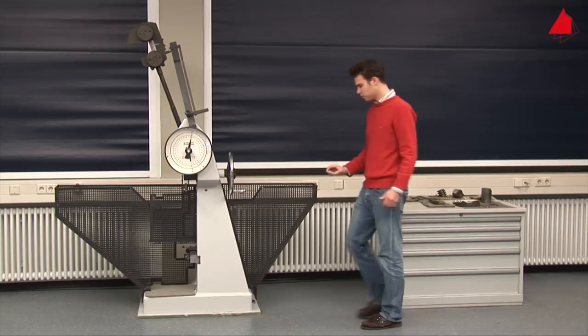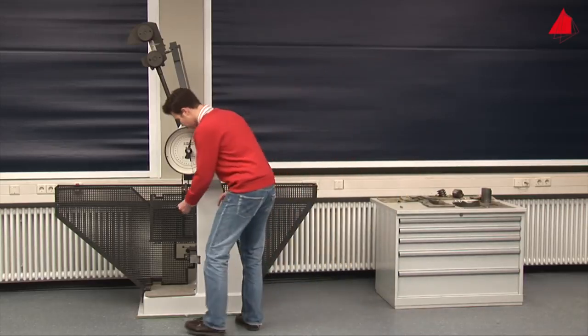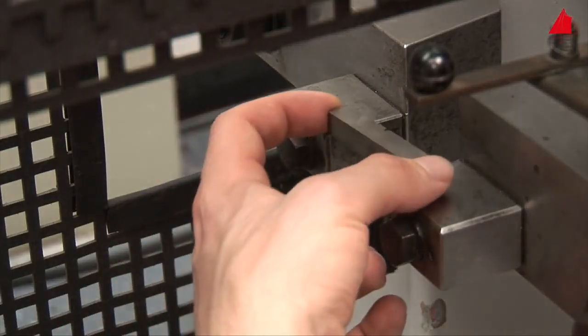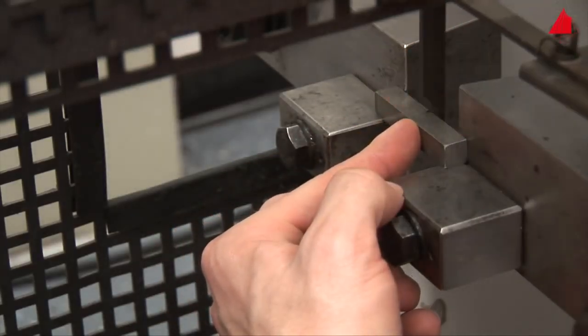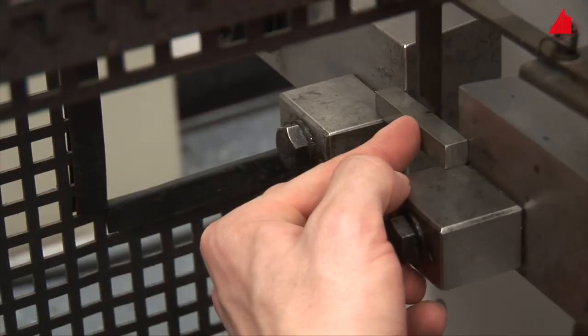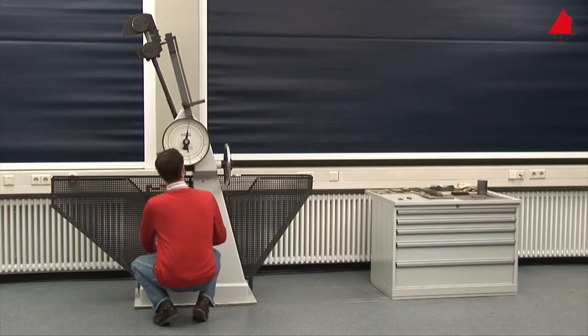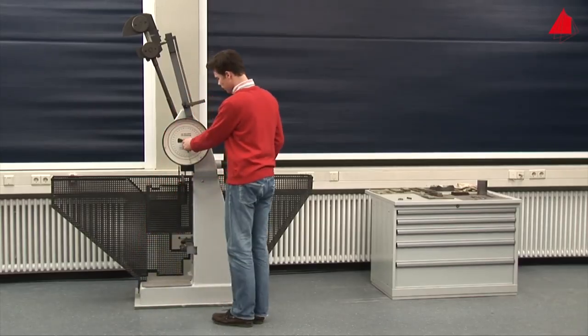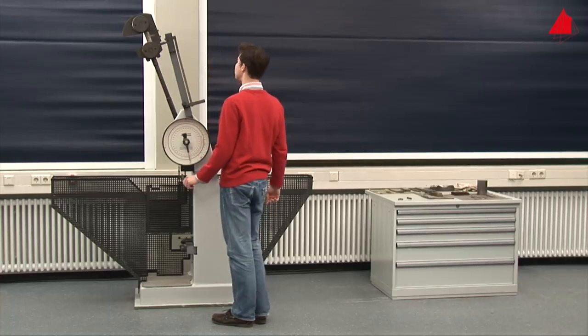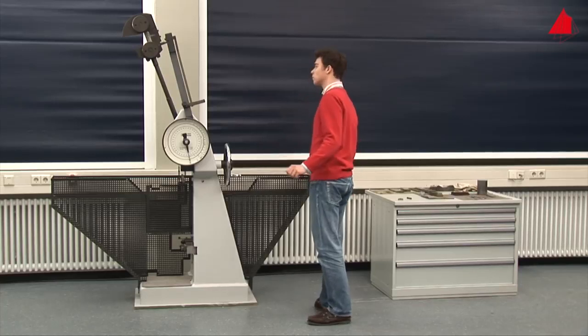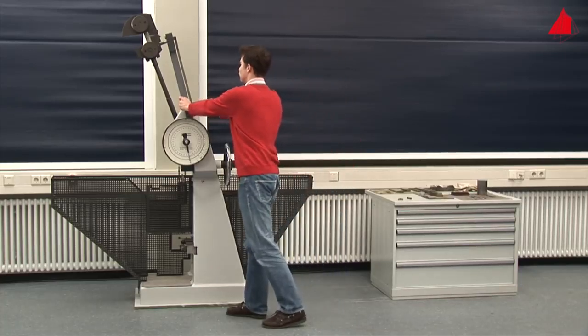The tester places the specimen on a support in the lower part of the machine and adjusts its position with a centering device. Next he turns the drag indicator downwards again and checks that everything is prepared correctly. Perfect! The test can begin.